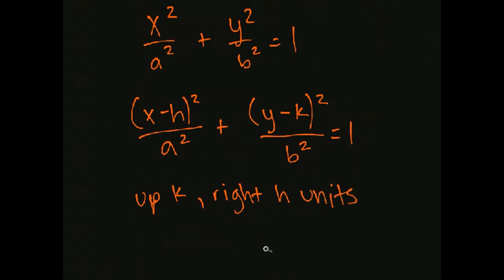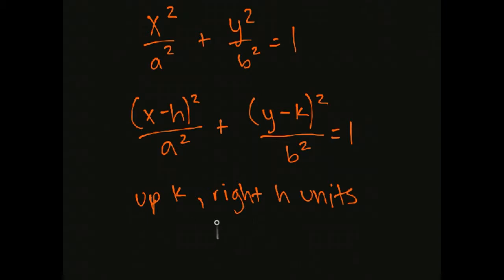To analyze shifted ellipses and find the vertices and foci, we're going to look at the non-shifted ellipse, identify what the shift is, go back to the original, find the vertices and foci of that graph, and then just shift those vertices and foci appropriately. So it's not like we have new formulas — we're just going to shift them at the end. Let's look at an example.